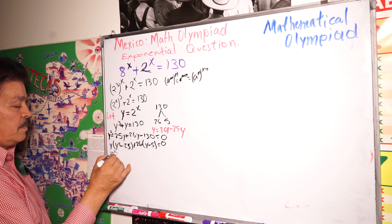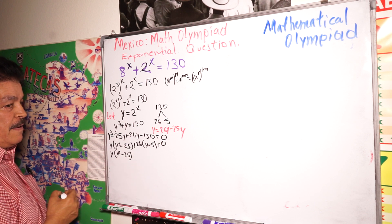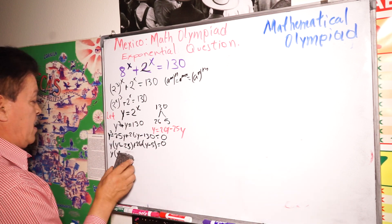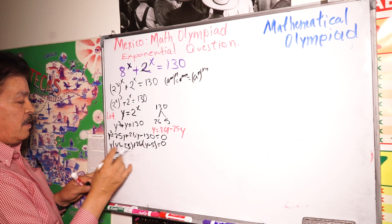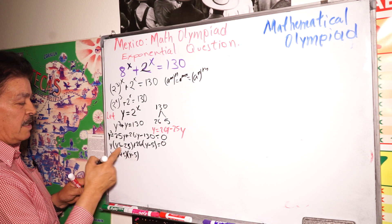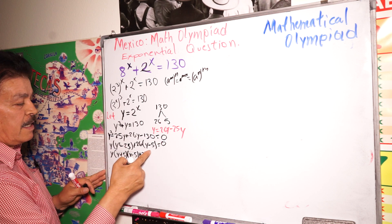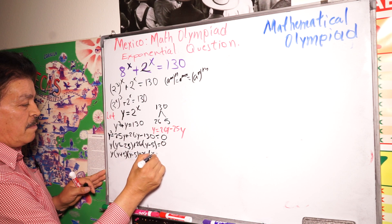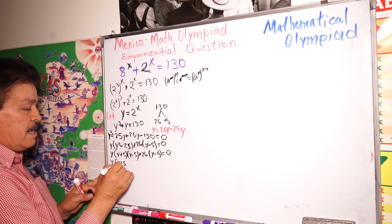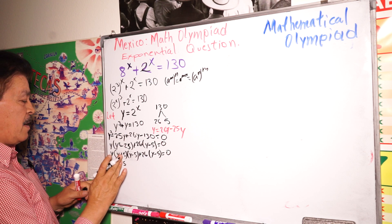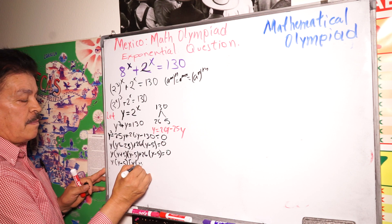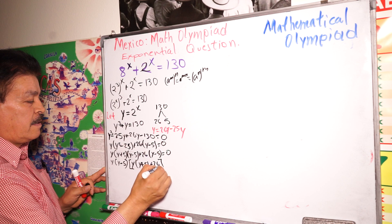We have Y times the quantity Y squared minus 25. We can simplify using the difference of squares: Y squared minus 25 equals Y plus 5 times Y minus 5. So we get Y times Y plus 5 times Y minus 5, plus 26 times Y minus 5 equals zero.